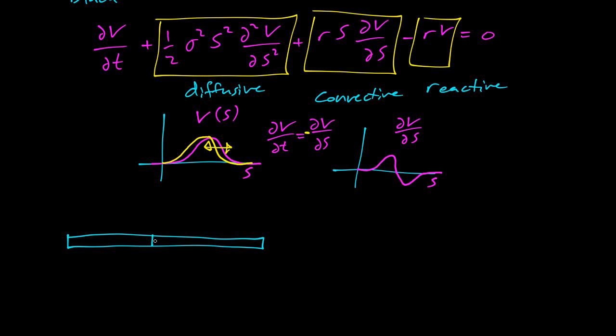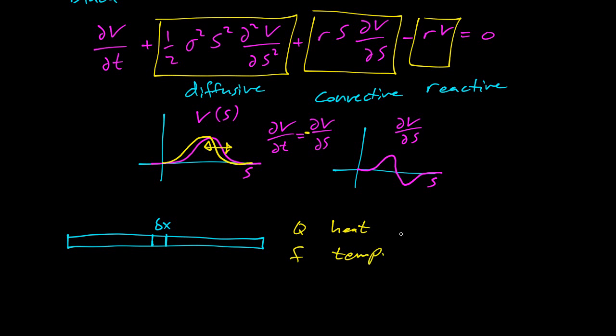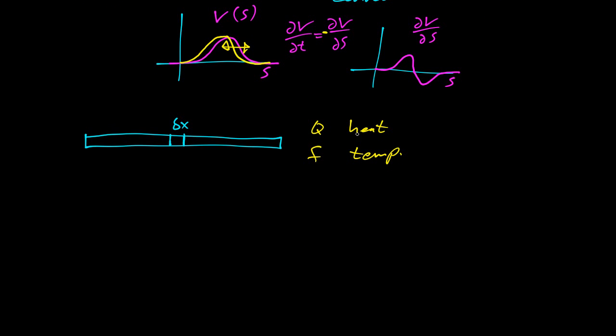So we've got a bar here. There's a little piece here with a width of delta x. Now there's a couple variables. There's q, which is measuring the heat, and f, which is measuring the temperature. And the simplest equation is that q equals f delta x. So temperature is instantaneous at a point, and the heat is the area, like integrating that temperature over a small area. So in this case, we're just a small little square here, and so it's just f times delta x.